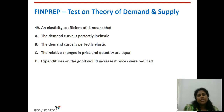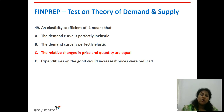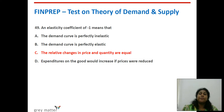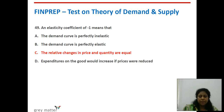Forty-ninth question: an elasticity coefficient of minus 1 means that what? When elasticity equals 1, it is unitary elastic. The negative sign means it is negative. The right answer is: the relative changes in price and quantity are equal. Perfectly inelastic means a small change in price gives no change in quantity demanded. Perfectly elastic means whatever the price change, quantity demanded is unaffected. Changes in price and quantity are equal — that is the right answer.